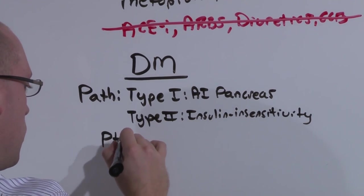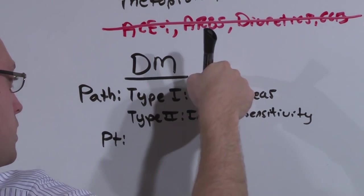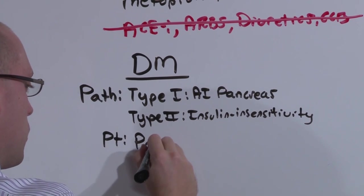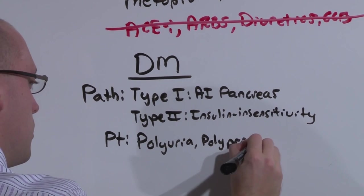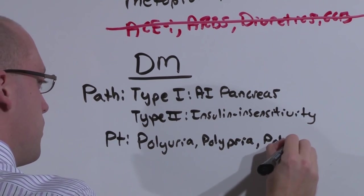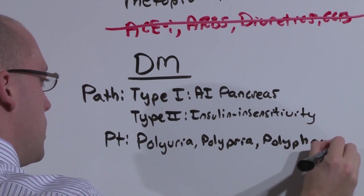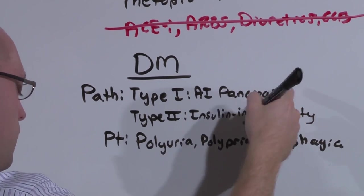The patient is generally going to be obese if they're type 2 and thin if they're type 1. And you're going to look for polyuria, polydipsia, and polyphagia. Obese if it's type 2, thin if they're type 1.